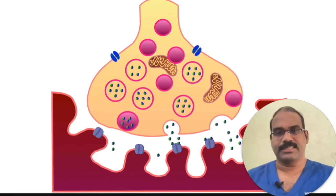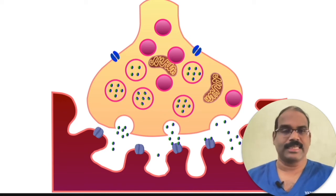The vesicle reaches the terminal. It prepares to release acetylcholine into the neuromuscular junction. And now acetylcholine gets deposited in the neuromuscular junction.